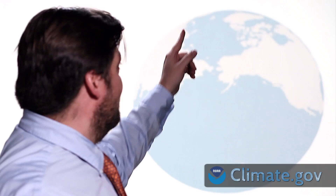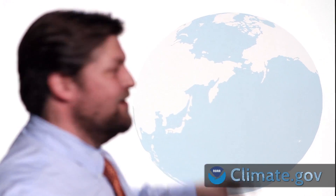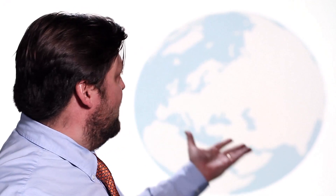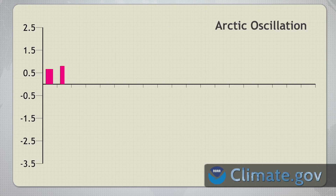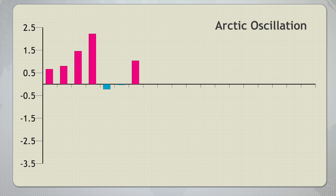The Arctic Oscillation, or AO, is an index describing the difference in pressure between polar locations and mid-latitude locations. It quantifies a pressure pattern often associated with major cold air outbreaks in the mid-latitudes, or whether polar air is confined to the higher latitudes. A positive AO is often associated with fewer polar air masses plunging into our part of the world.